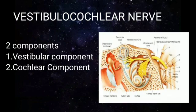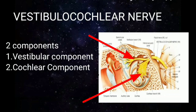The vestibulocochlear nerve, the 8th cranial nerve, consists of two components: the vestibular nerve and the cochlear nerve. These two components are separate entities, responsible respectively for hearing and for maintaining balance or equilibrium. The vestibular nerve deals with the maintenance of balance and equilibrium, and the cochlear nerve deals with the perception of hearing.